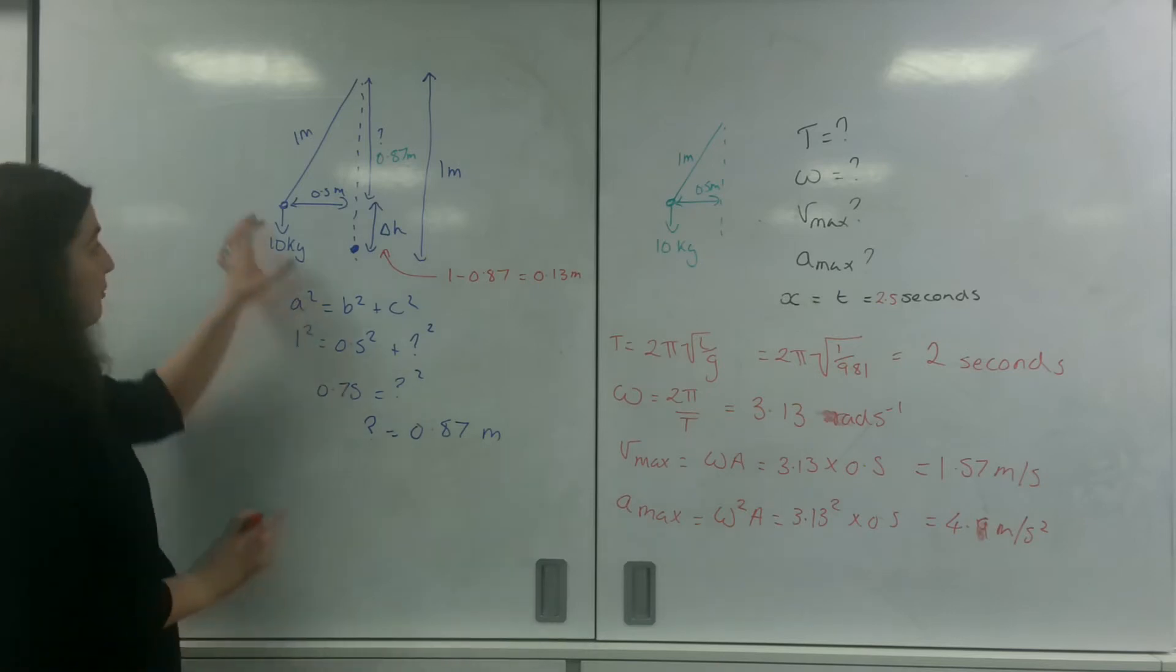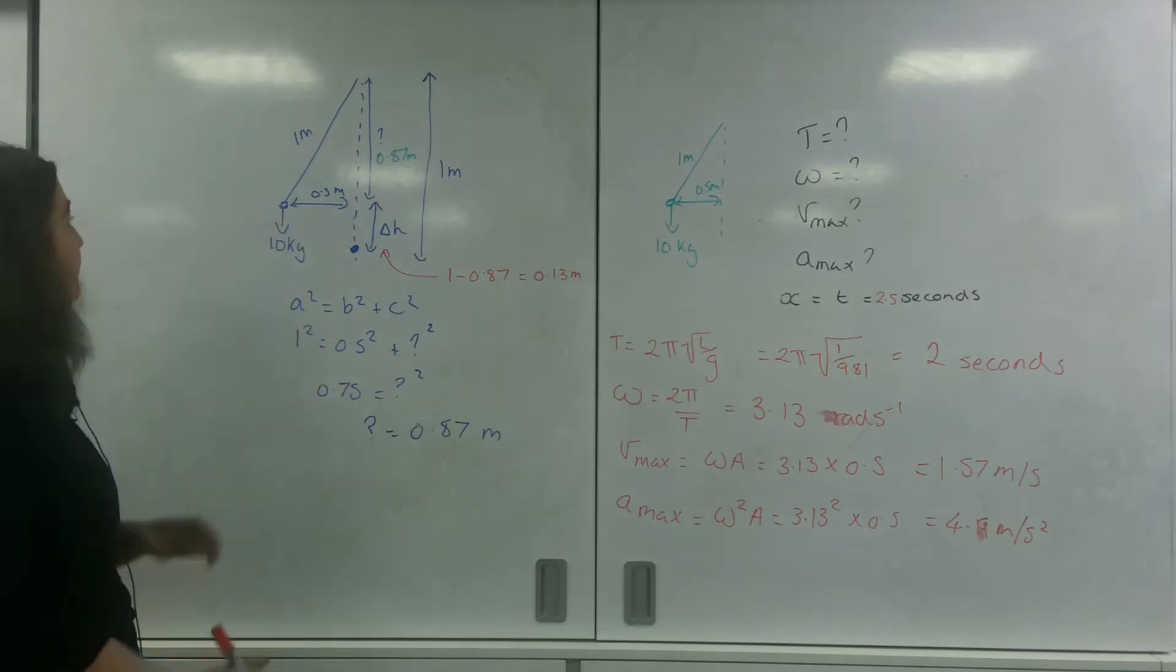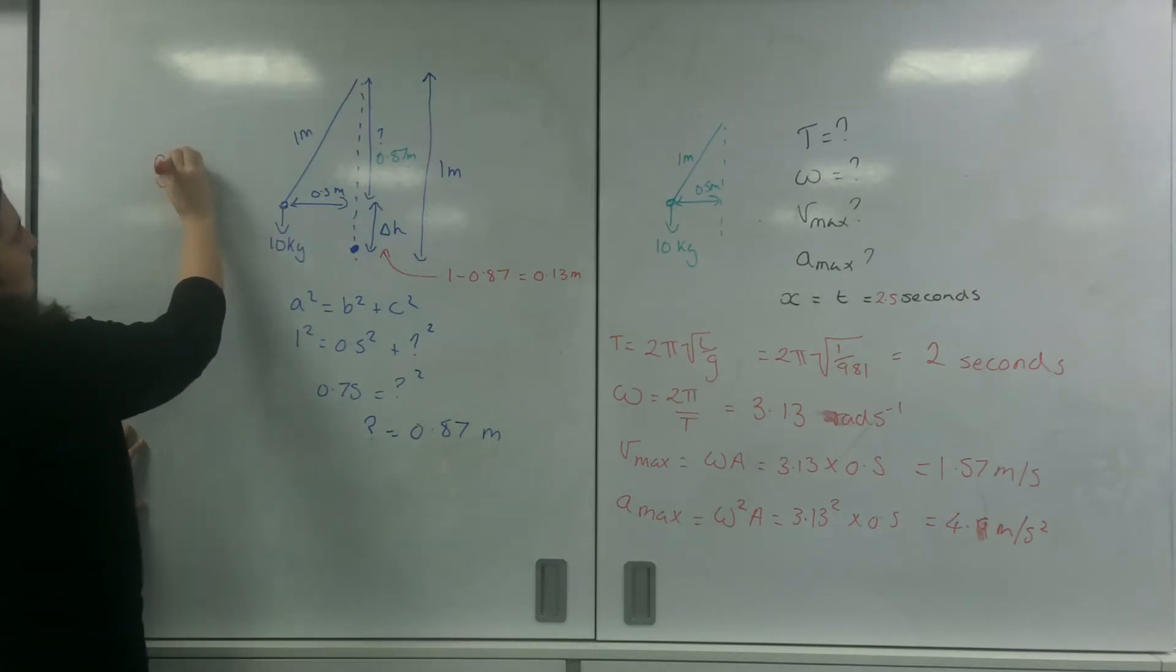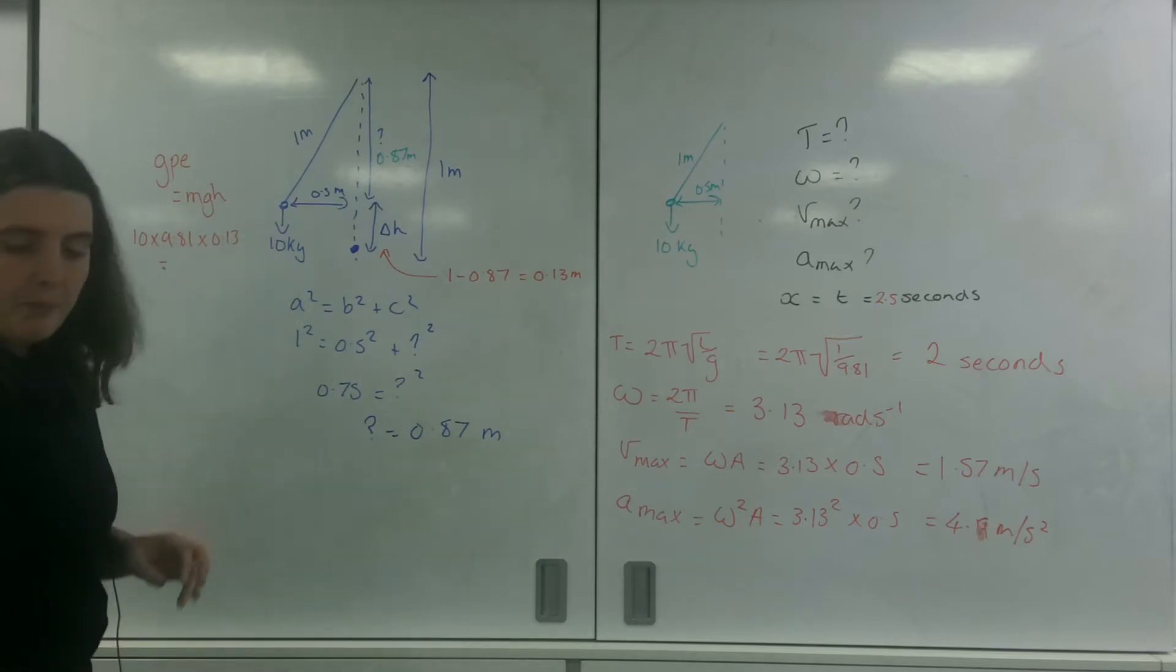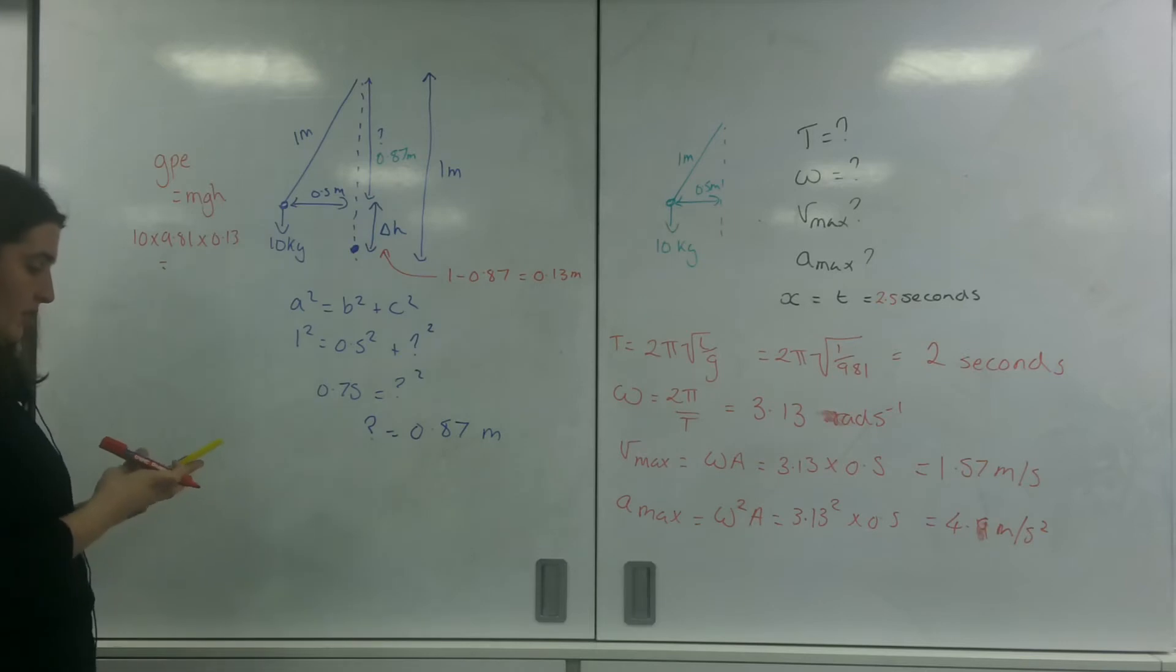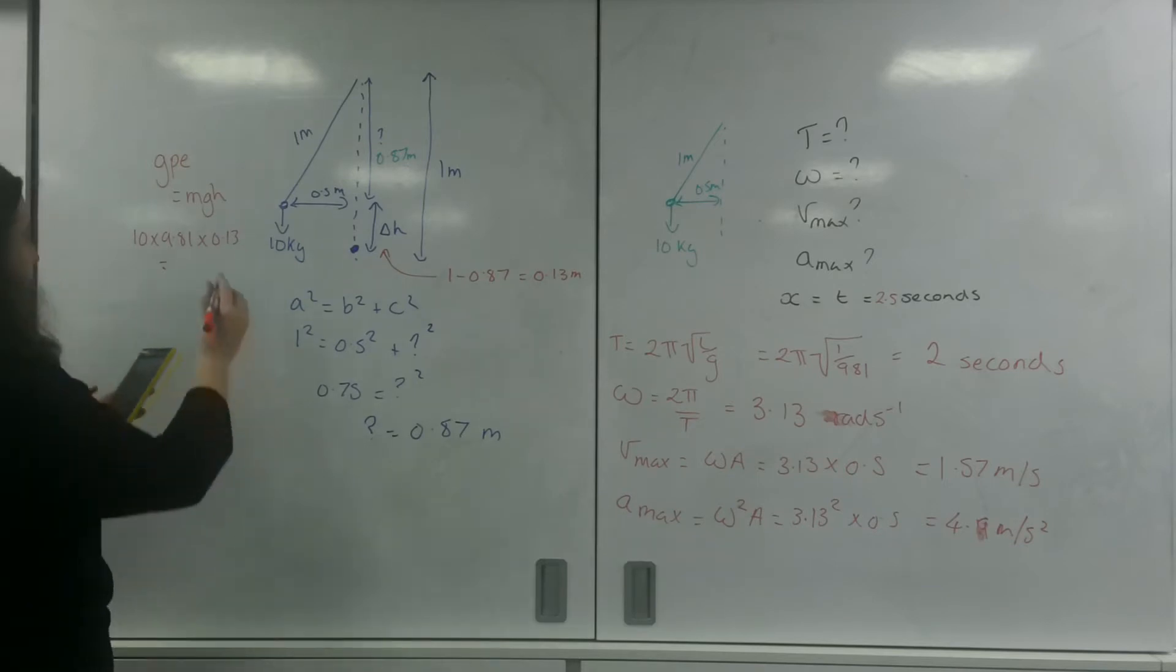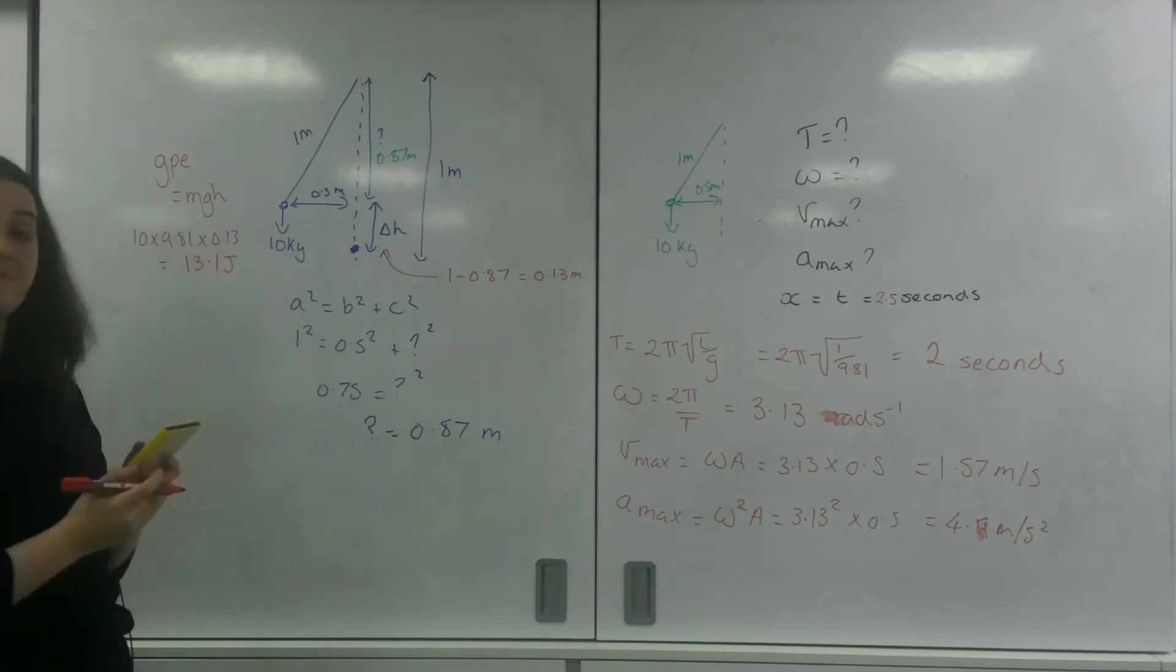So I can actually work out my GPE here. So GPE is MGH, so 10 times 9.81 times my 0.13. And I get 13.1 joules.